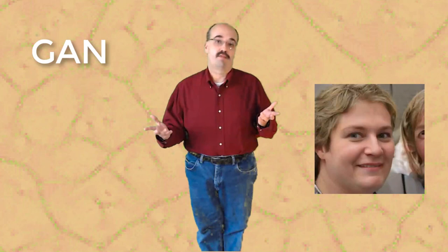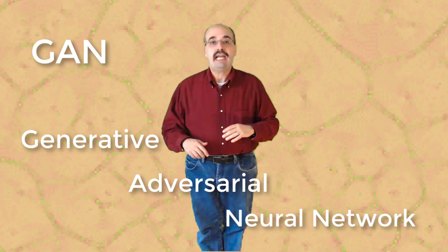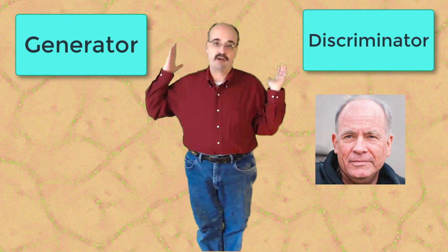The GAN is one type of neural network that we'll look at in this course. GAN stands for Generative Adversarial Neural Network. GANs are typically used to generate faces, although they can generate any sort of fake data that they're trained on. A GAN works by having two neural networks. The first neural network is the generator. It essentially takes random numbers and generates faces.